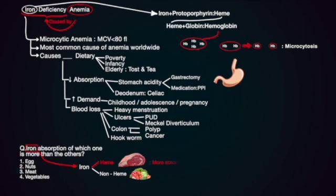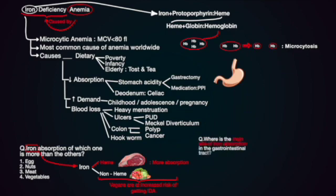What we can conclude here is that vegan people who strictly eat vegetables are at increased risk of getting iron deficiency anemia. These patients are known for vitamin B12 deficiency, but iron deficiency is also probable in these patients.